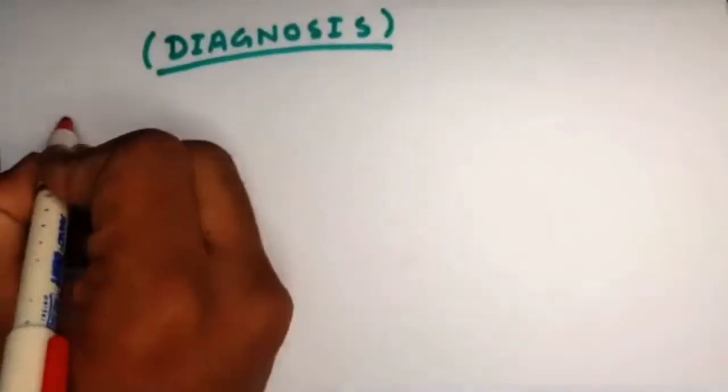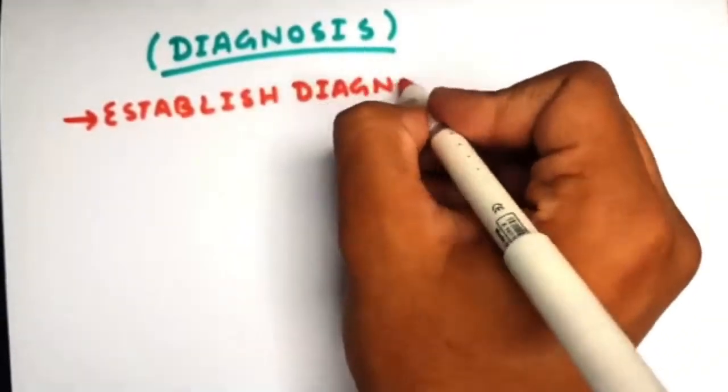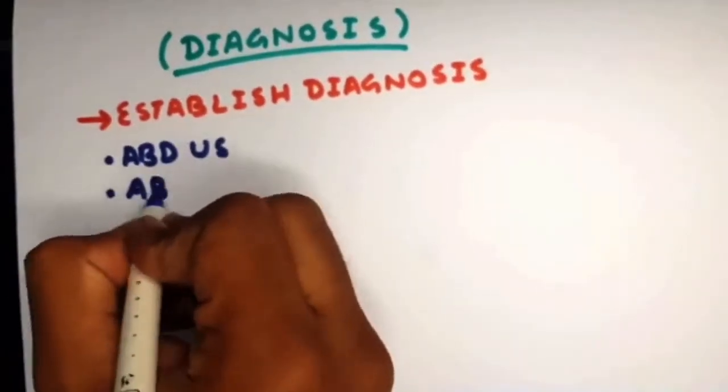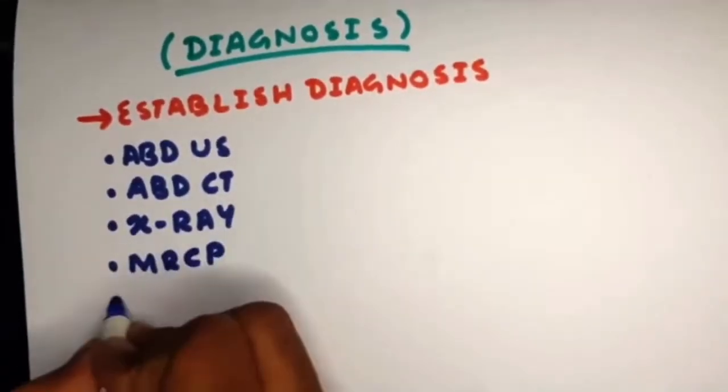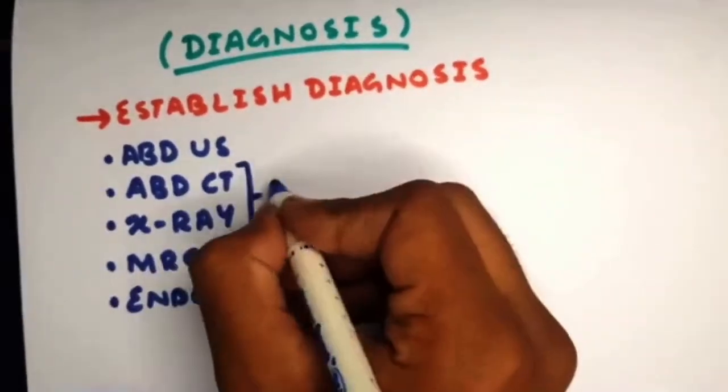When we suspect chronic pancreatitis, we need to establish our diagnosis. First, we do an abdominal ultrasound, then abdominal CT and x-ray to check for calcifications, MRCP, and endoscopic ultrasound.